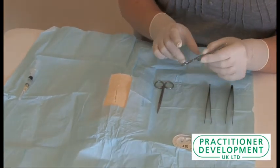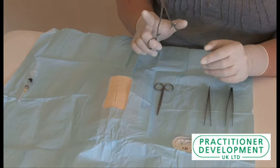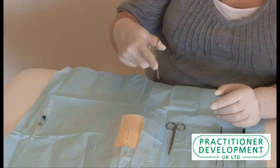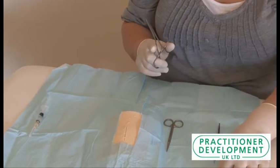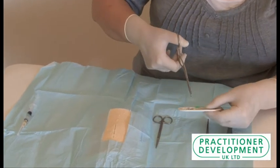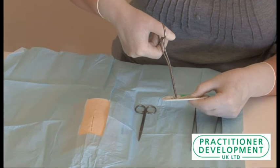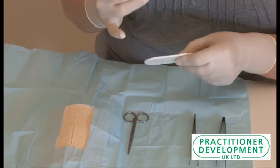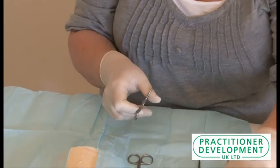The needle holder should be held between your thumb and middle finger with your index finger free to guide. So we're going to pick up the ethylon and I'm going to get hold of the end of the needle with the end of the suture holder.